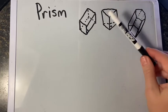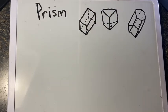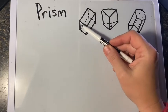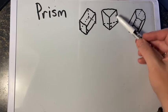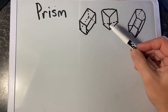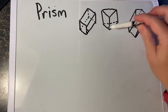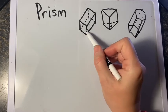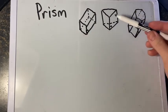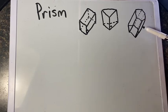The lateral faces are the sides of the prism that are not part of the base — this side here, here, here, and here. This rectangular prism has four faces; this triangular prism has three. If the lateral edges are perpendicular, these are called right prisms. If the lateral edges are not perpendicular, then these are called oblique prisms.